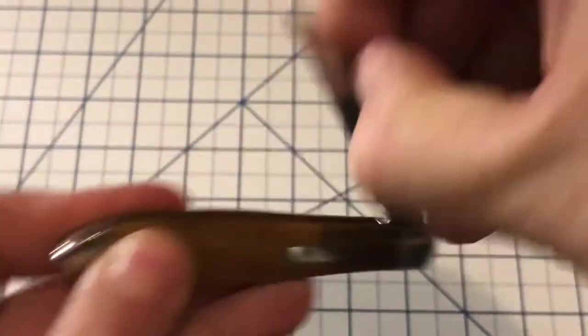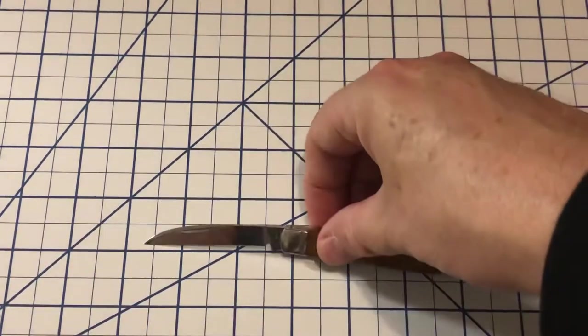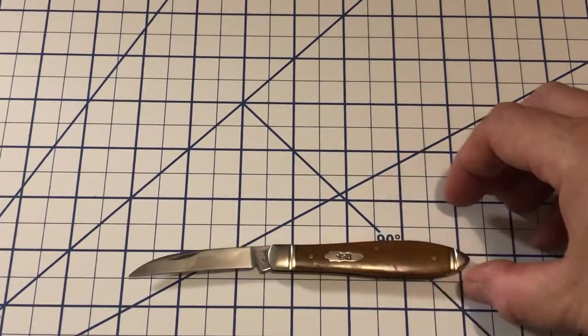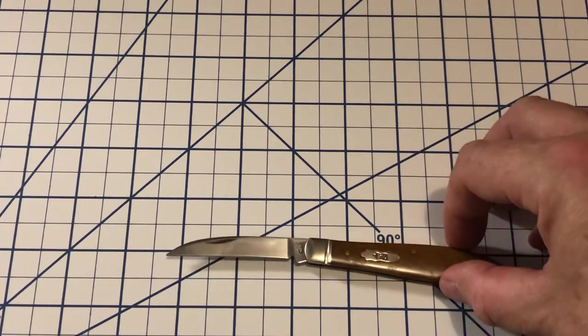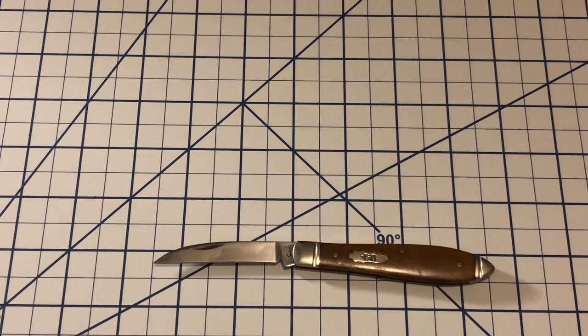Let's open this up and you can see it is a nice wharncliffe blade. The blade itself is going to come in right about two and a half inches. This is in Case's stainless true sharp which most people believe is probably a 420 HC. It's going to be pretty close to that in your use.